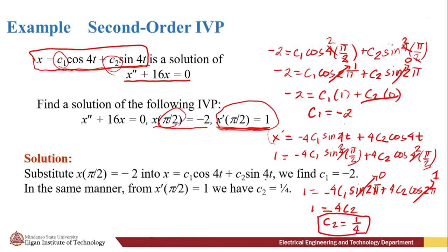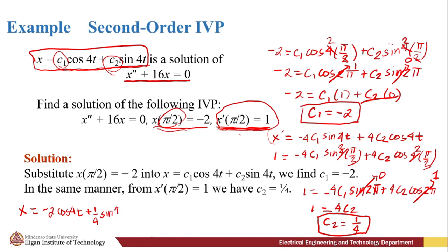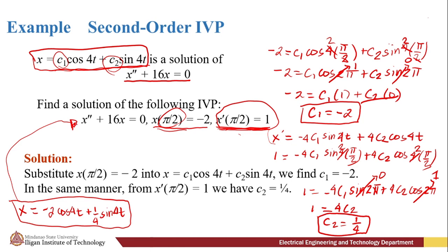Based on our initial conditions, we found c₁ = −2 and c₂ = 1/4. Substituting these into the general solution gives the particular solution: x = −2cos(4t) + (1/4)sin(4t). This is our particular solution for this initial value problem — it simply involves substitution.